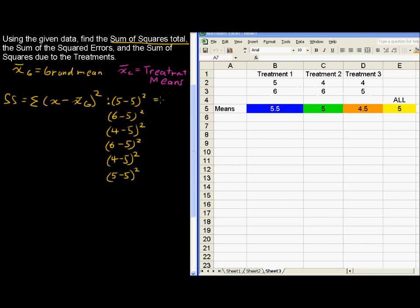Then we can evaluate each of these, and we get 0, 1, 1, 1, 1. Remember, 4 minus 5 is negative 1, but negative 1 quantity squared is positive 1, and then 0. So, the sum there is 4, so our sum of squares total equals 4. That's one of them knocked out.